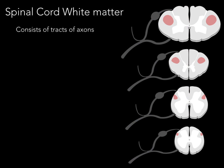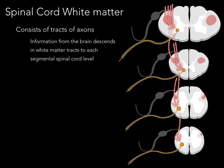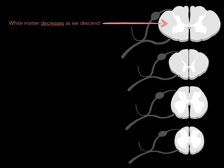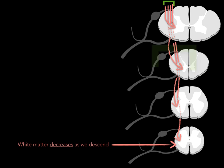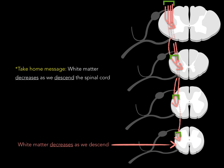Spinal cord white matter also consists of descending tracts. A descending neuron comes down and synapses on a ventral horn cell, and then the lower motor neuron axon courses out. This happens at each segmental level — lumbar, thoracic, and cervical. Information from the brain descends in white matter tracts to each segmental spinal cord level. White matter decreases as we descend because at each segmental level, information ends, leaving fewer descending fiber tracts until we reach the sacral region.